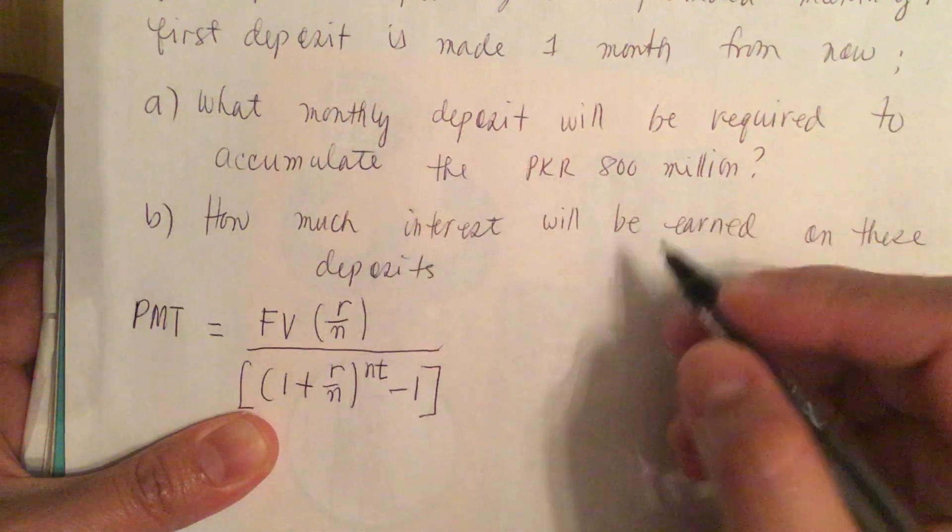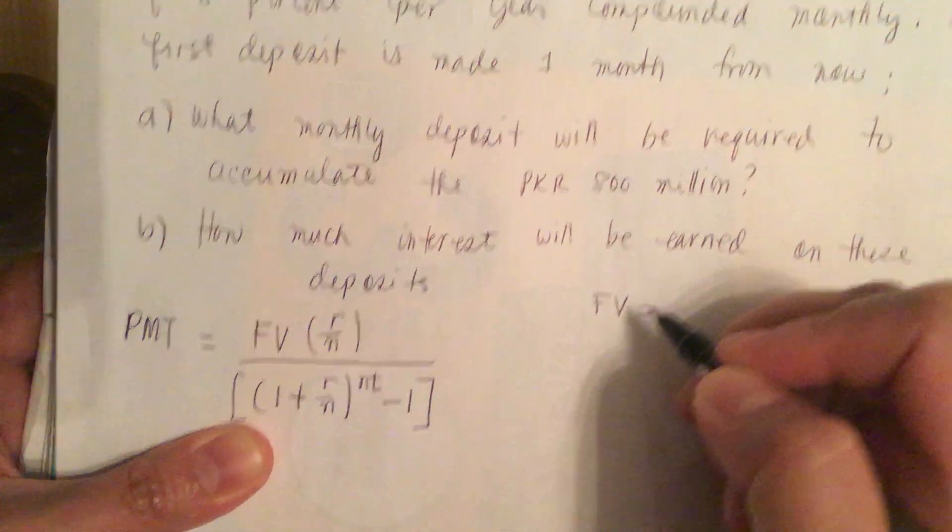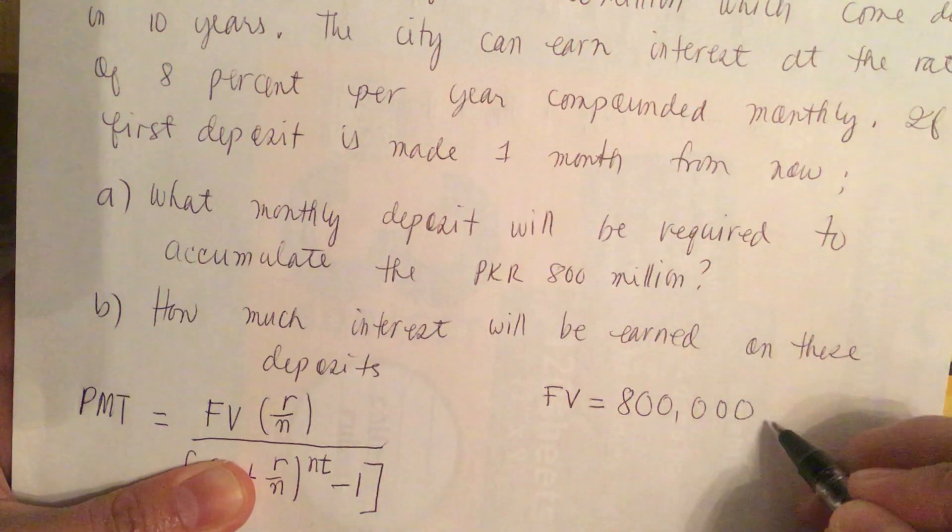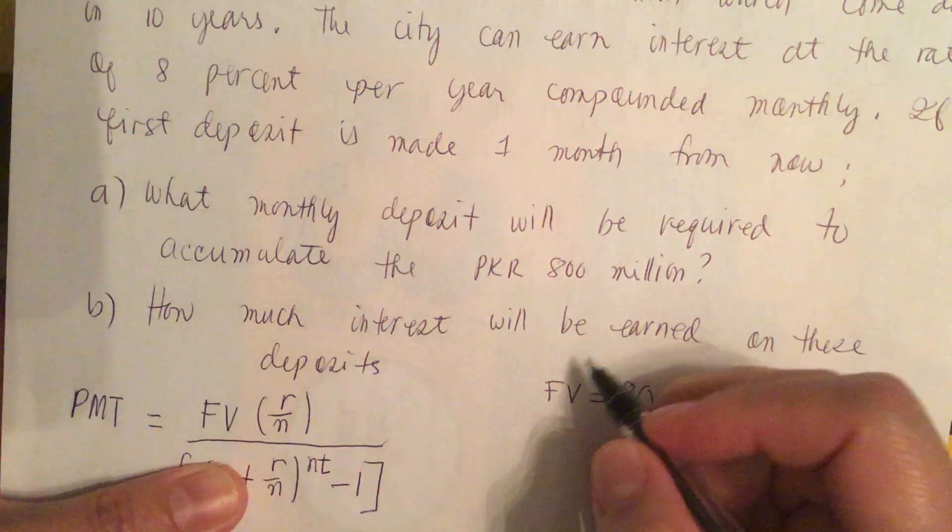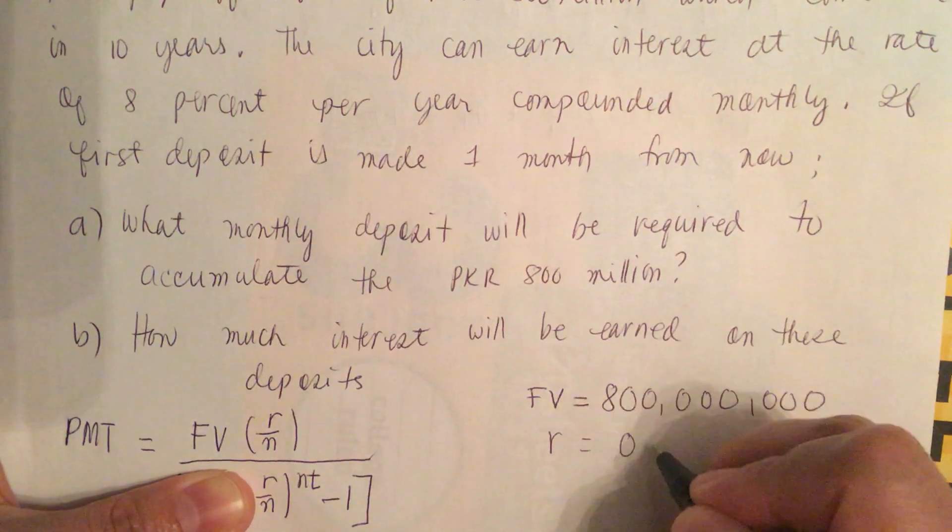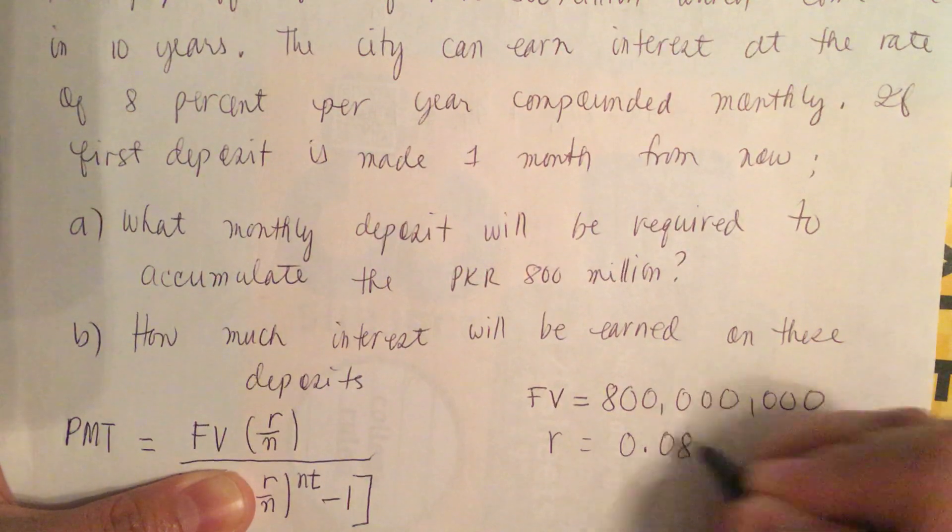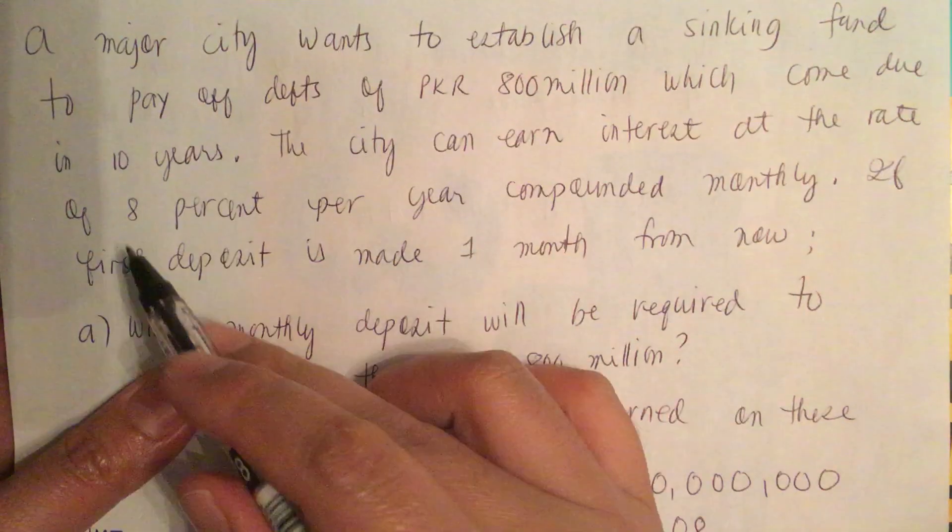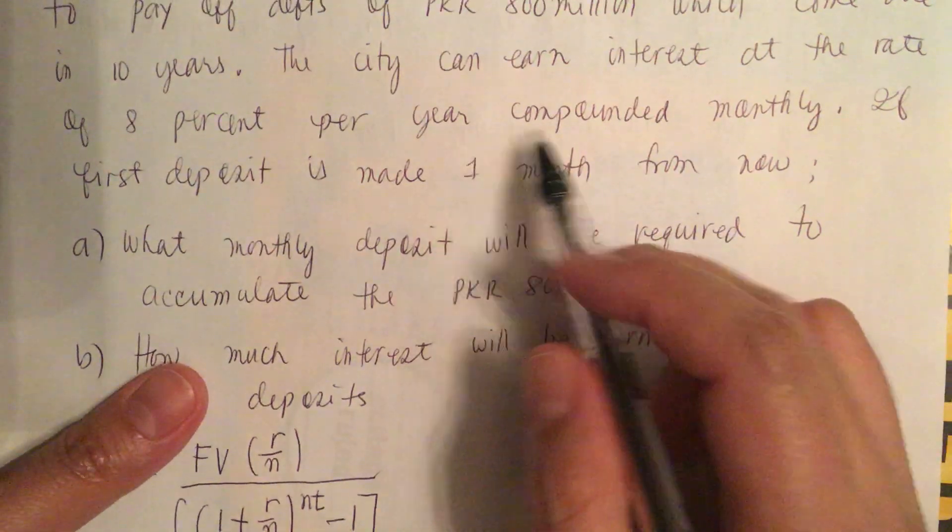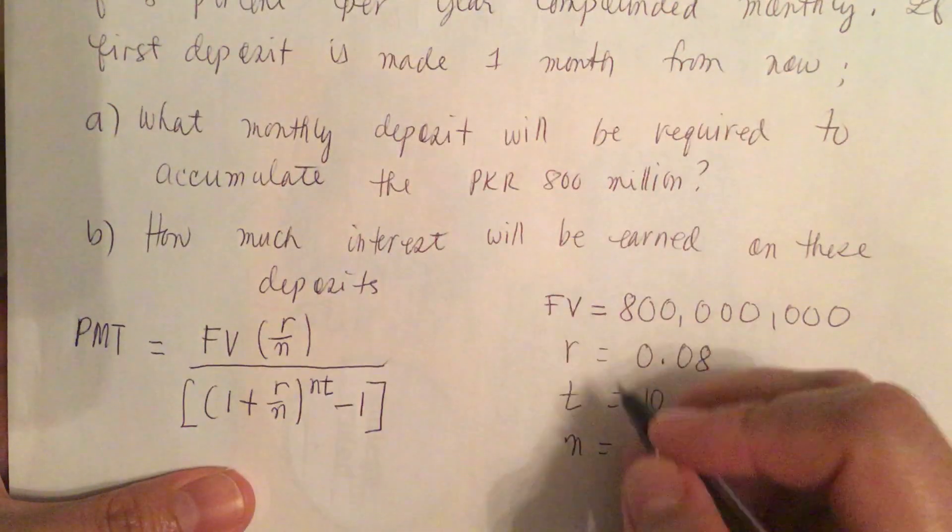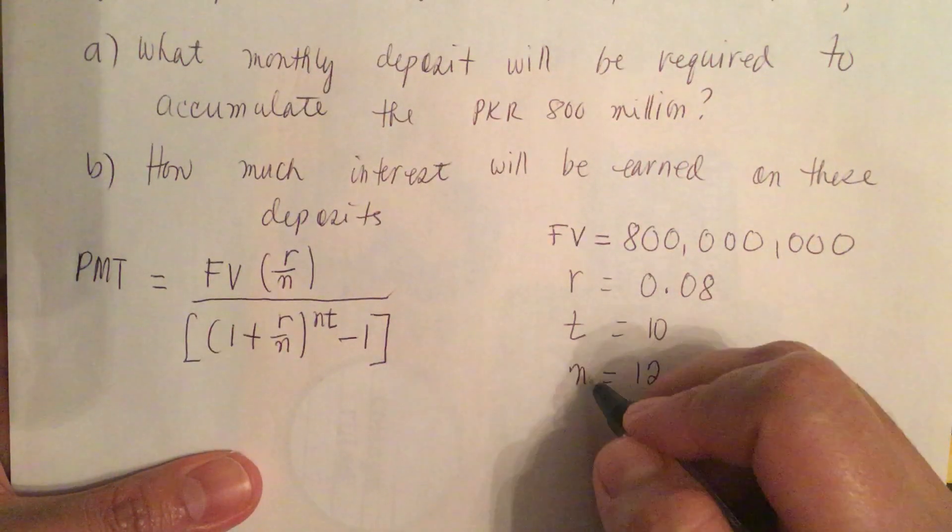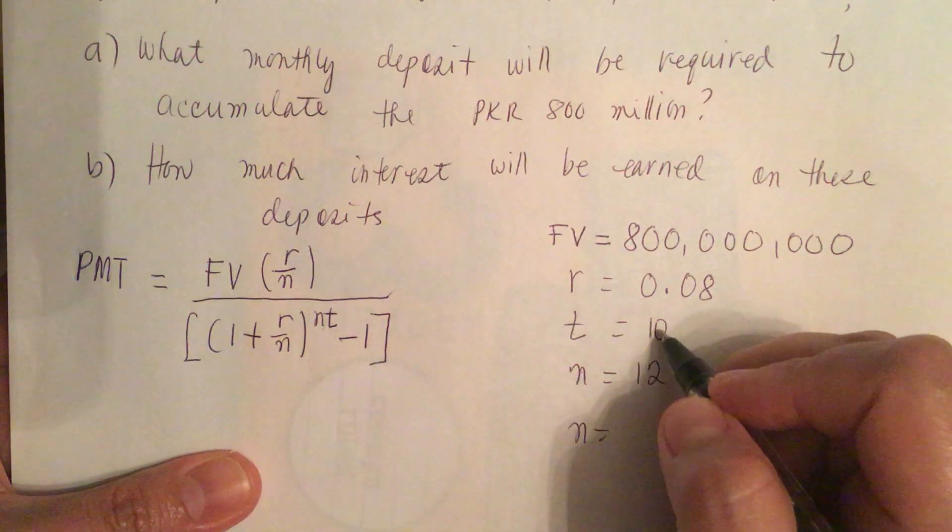Now we make our parameter list. They give us the future value, so FV equals 800 million. r or the interest rate equals 8 percent, which we change to decimal so it's 0.08. t equals 10 years, and n equals 12 because it's compounded monthly. n times t equals 120.